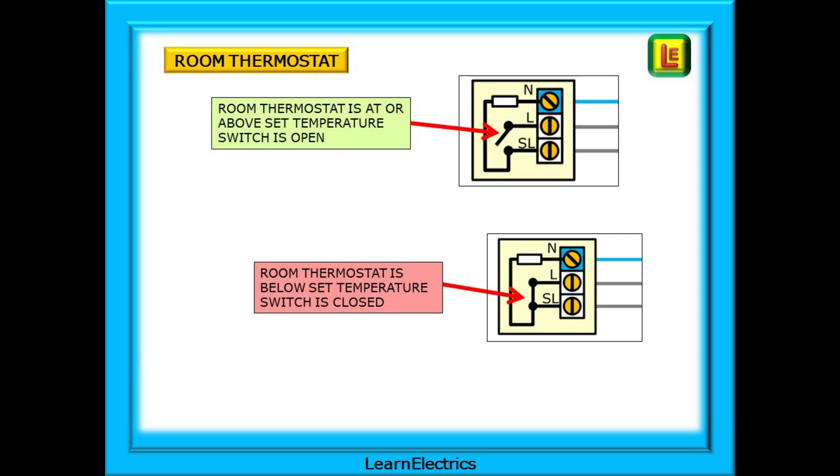The room thermostat is shown as a three terminal device. Of interest to us are the L and SL terminals. If the room or zone is up to temperature, then the switch will be open. L and SL will not be in the closed position. When the room temperature falls below the set temperature, or someone turns the thermostat up to a higher setting, the contacts will close. L and SL will be in the closed position allowing current to flow through the switch. Up to temperature, switch open. Below set temperature, switch closed.